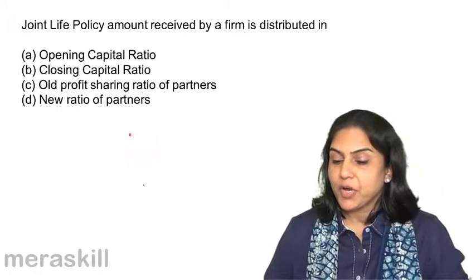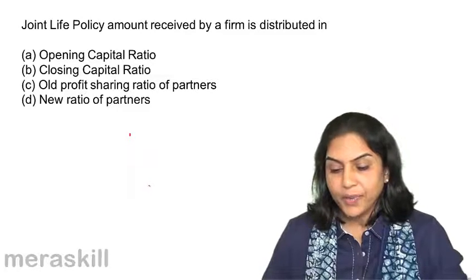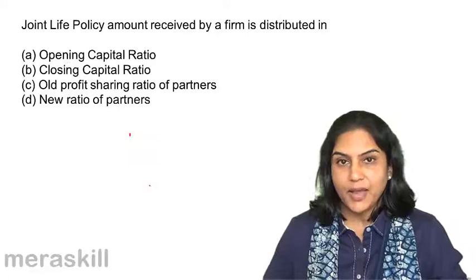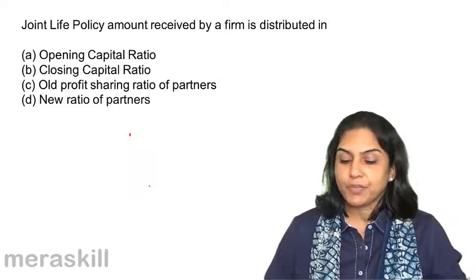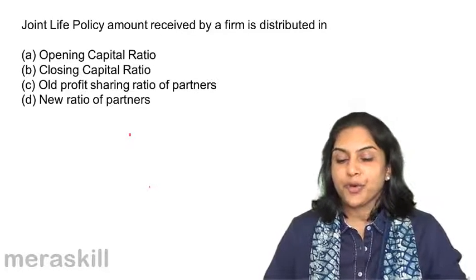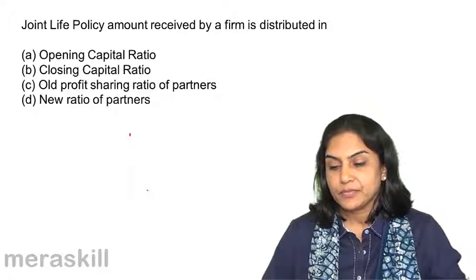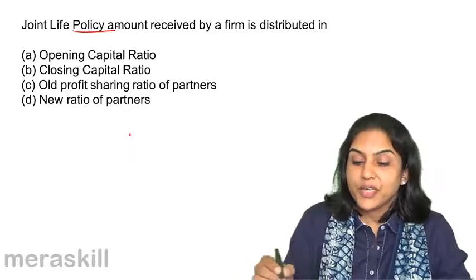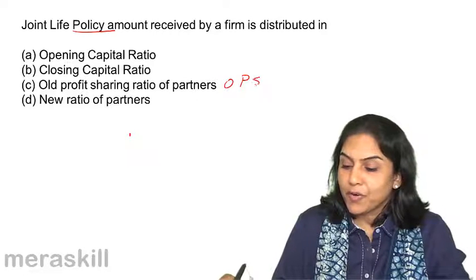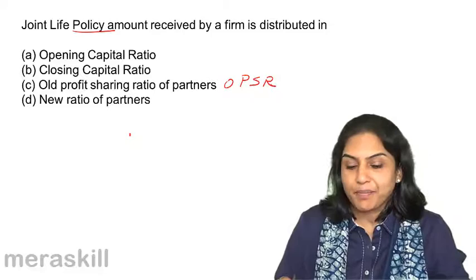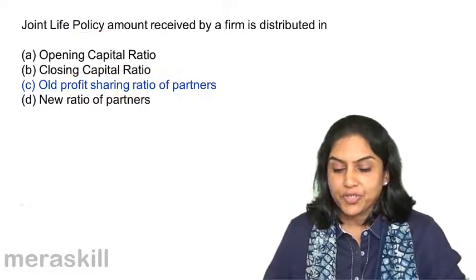Joint life policy amount received by a firm is distributed in: A, opening capital ratio; B, closing capital ratio; C, old profit sharing ratio of the partners; D, new profit sharing ratio of partners. As we have done several times, it will be in the old profit sharing ratio of the partners. So the correct answer is C, option C.